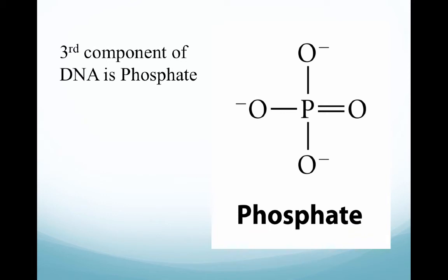Let's look at the third component of DNA: the phosphate group. The phosphate is in the center, double-bonded to one oxygen, with the other oxygen bonds being single bonds, and those oxygens carry negative charges. This is what makes DNA negatively charged — the phosphate backbone. That becomes very important in lab analysis because we use charges to separate DNA by molecular weight.